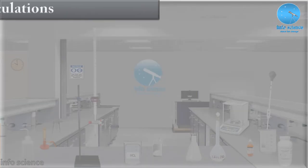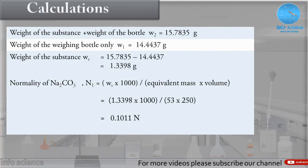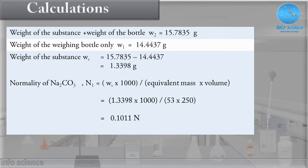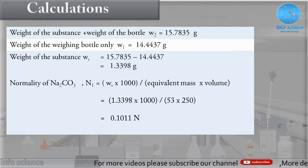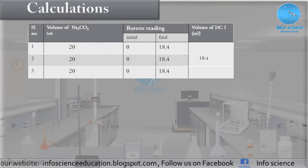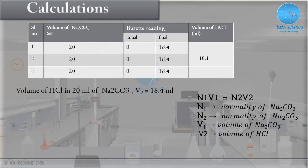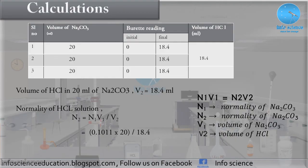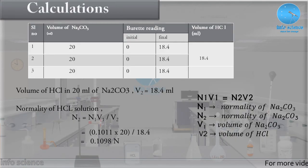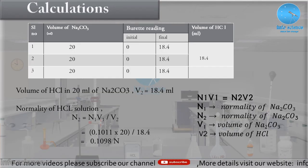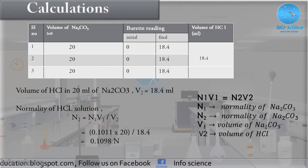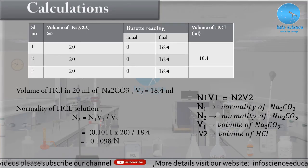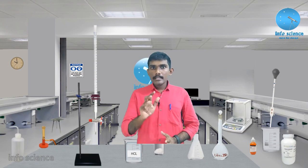The next step is the calculation. The mass of Na₂CO₃ used is 1.3398 grams. The normality of Na₂CO₃ is equal to 0.1011 N. Using the normality of Na₂CO₃ and the volume of HCl, we can calculate the normality of the HCl solution.